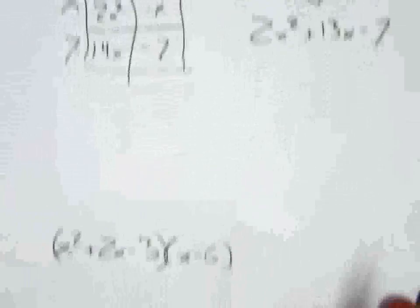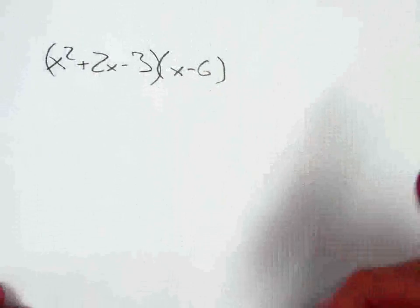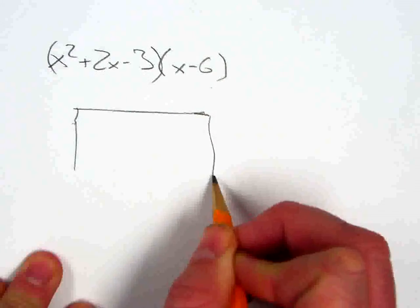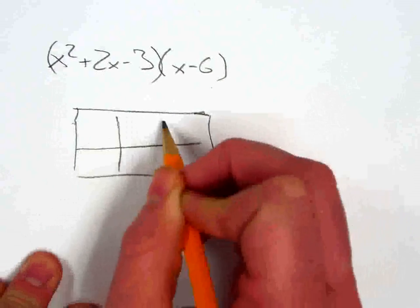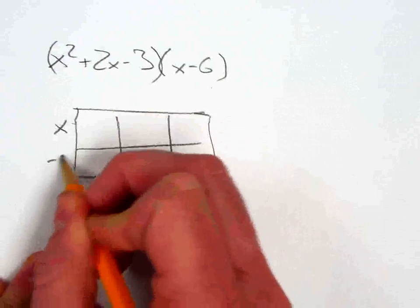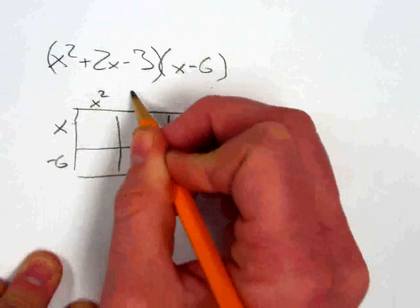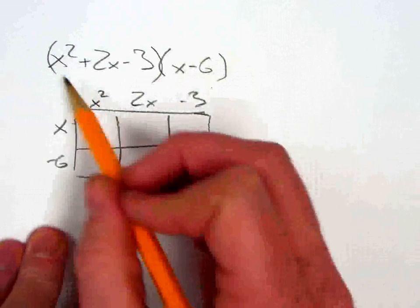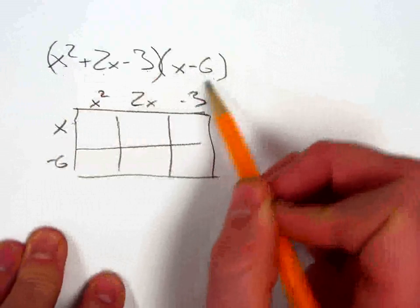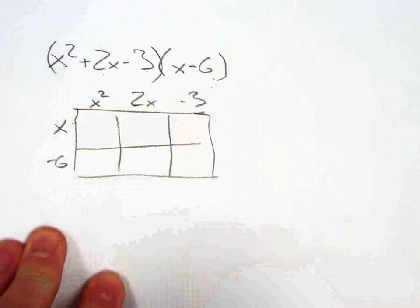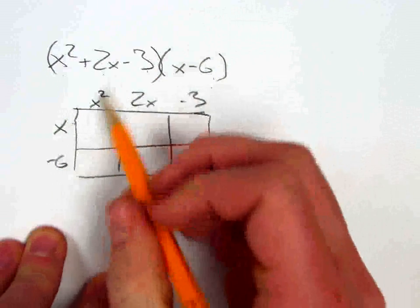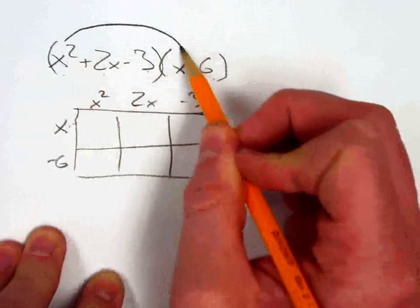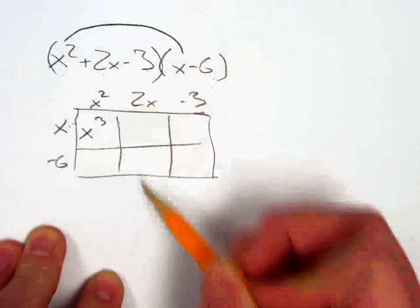Now let's look at a trinomial times a binomial. Once again I'm going to start by using my box so we can see the connection between the two strategies for multiplying. If I set my box up this way, it's a trinomial times a binomial so I've got a 2 by 3 box.